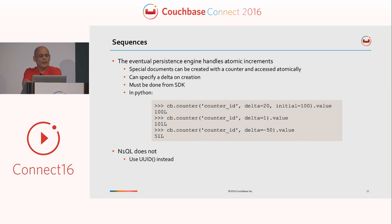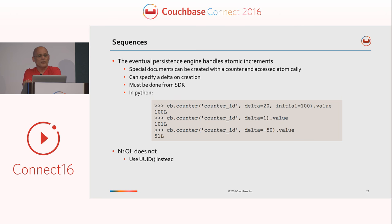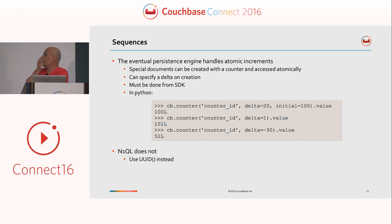Sequences, which in relational you use an awful lot, you have two options. One is on the N1QL front, you can generate unique IDs with the UUID function, and that's a simple enough solution. On the other hand, if you're using get and set, you can generate counter documents which are incremented atomically. Here's an example in Python: you use the counter function, which initializes it to start with, and then you can increment or decrement it with a delta.